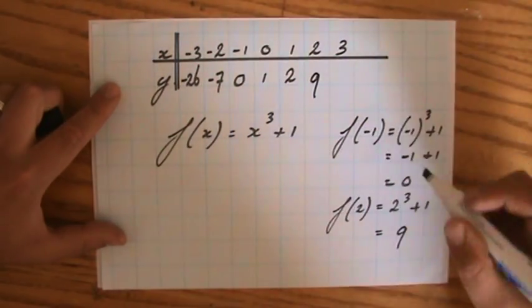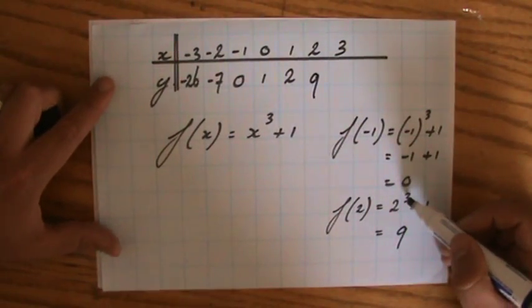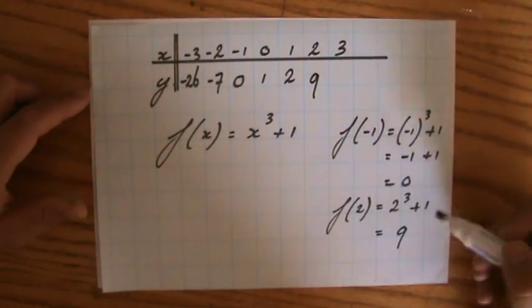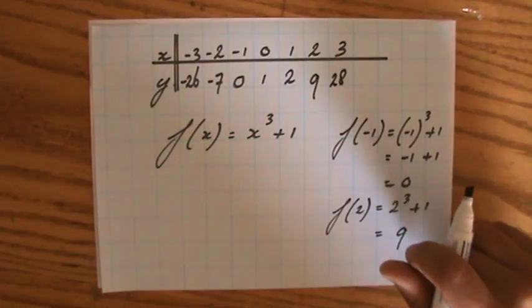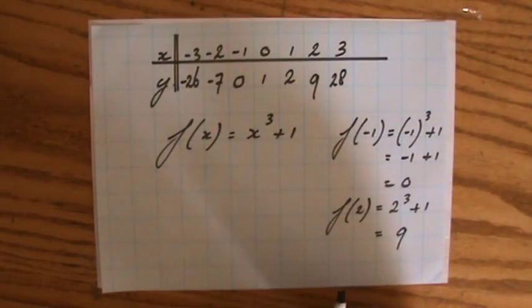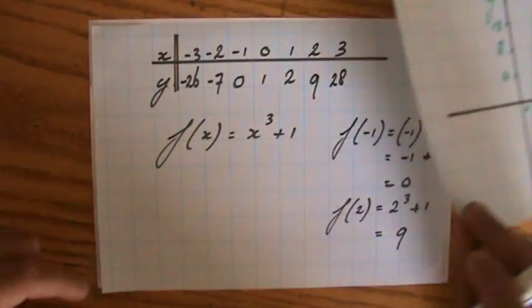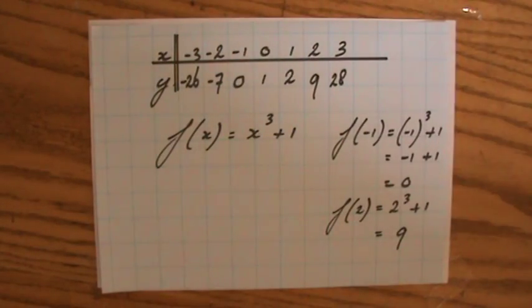And 3, 3 to the power of 3 is 27. Very good. Plus 1 is going to be 28. So those are my coordinates. I have 7 of them. Hopefully that's going to be enough. And where is my graph? Here we are. We're going to plot them now.